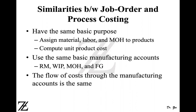The similarities include that they both have the same basic purpose. They are both used to assign material costs, labor costs, and overhead costs to products. Whether you're using a process costing system or a job order costing system, the end result is that you want to find out a product cost. In process costing, you assign costs to a particular department or process and then allocate costs to a product, whereas in job order costing, you directly assign costs to a product. But the purpose is the same — in the end, you're assigning costs to a product.